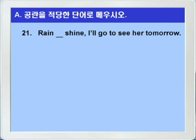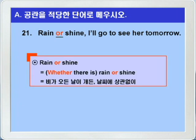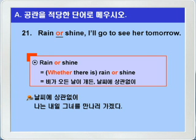21번입니다. rain, blank, shine. I'll go to see her tomorrow. blank에는 or가 들어가면 되겠어요. rain or shine. 이 말은 whether there is rain or shine에서 whether there is가 생략된 형태입니다. rain or shine, 비가 오든 날이 개든, 다시 말해 날씨에 상관없이, I will go to see her tomorrow. 나는 내일 그녀를 만나러 가겠다.